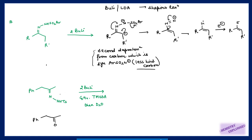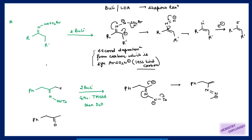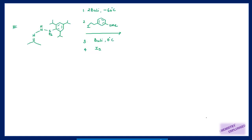When butyl lithium is used, protons are removed from this position and this position, giving negative charges at both. Then the bond shifts and the rest of the reaction proceeds — the carbanion takes D from a deuterium source, and we get the final compound with deuterium incorporated at this position.